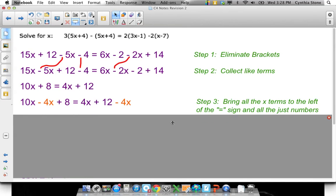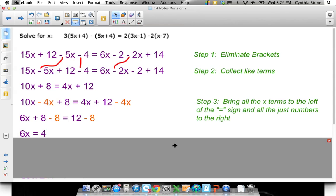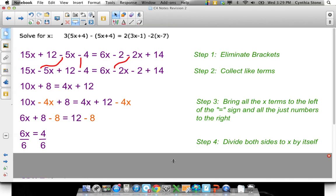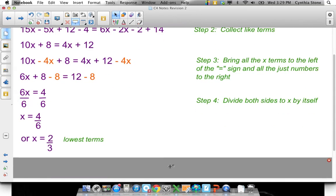Here's where we bring all the x terms to one side, all the just number terms to the other side. First, to get this 4x over here, I subtracted it from both sides and that ended up with 6x because 10x minus 4x is 6x. To get this 8 over to the other side, I subtracted 8 from both sides, leaving 6x equals 4. Then divide both sides by 6. x then equals 4 over 6, and it is best if you can to express your answer in lowest terms.